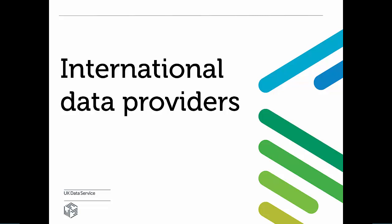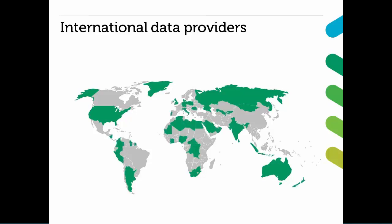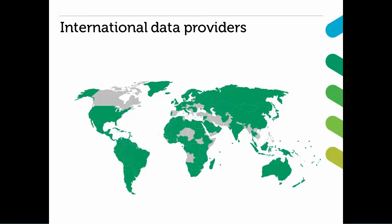International governmental organisations like the World Bank and International Monetary Fund are major producers of aggregate data. With their global reach and representation in many countries, they are well placed to collect and aggregate social and economic data. We'll look at a few of these organisations and the types of data they produce.